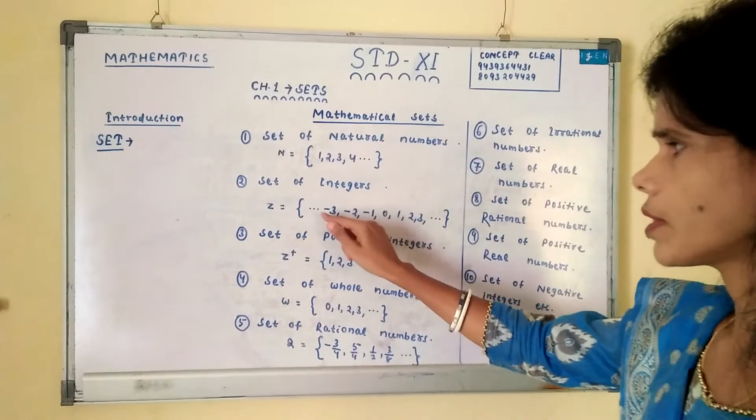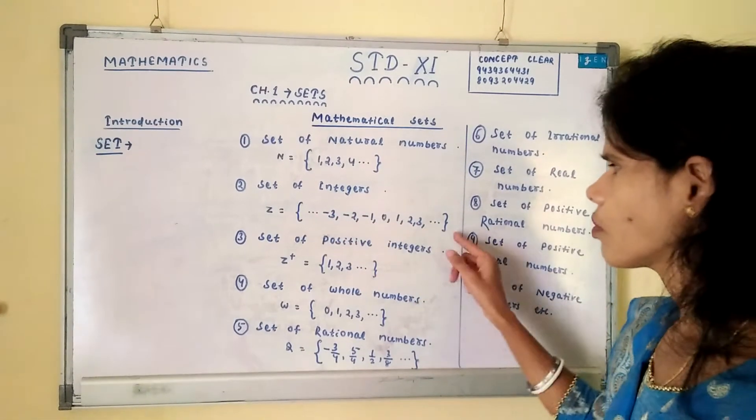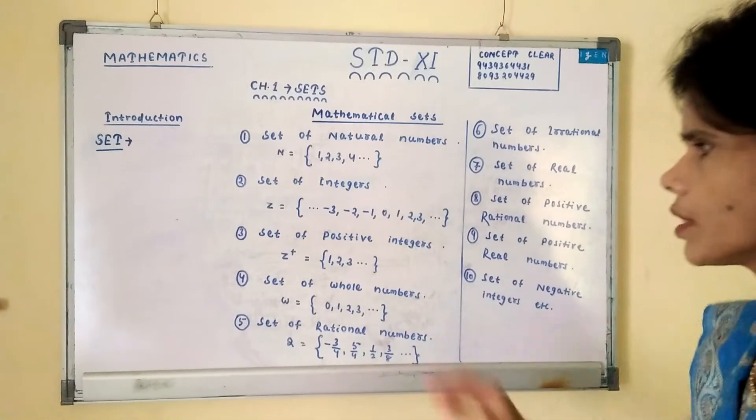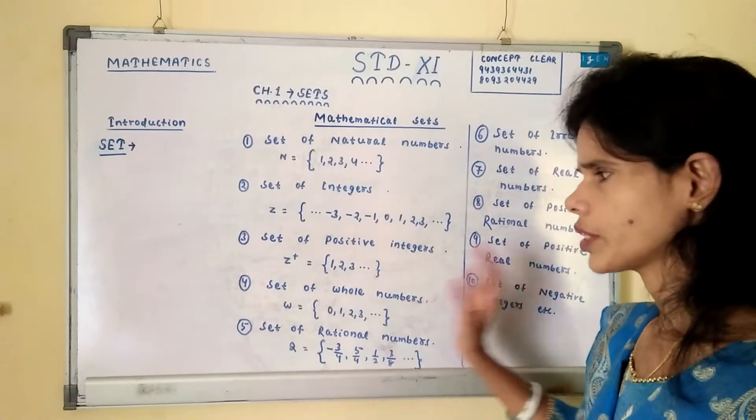Set of integers Z includes negative and positive numbers including 0. And set of positive integers: only positive 1, 2, 3, 4, etc.